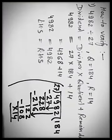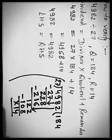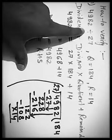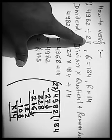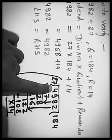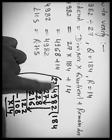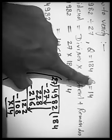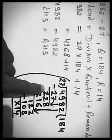Now, how to verify dividend equals to divisor into quotient plus remainder. See the first example. 4,982 divided by 27. When we divide 4,982 by 27, then we will get 184 as quotient and R as 14 as remainder. See how?